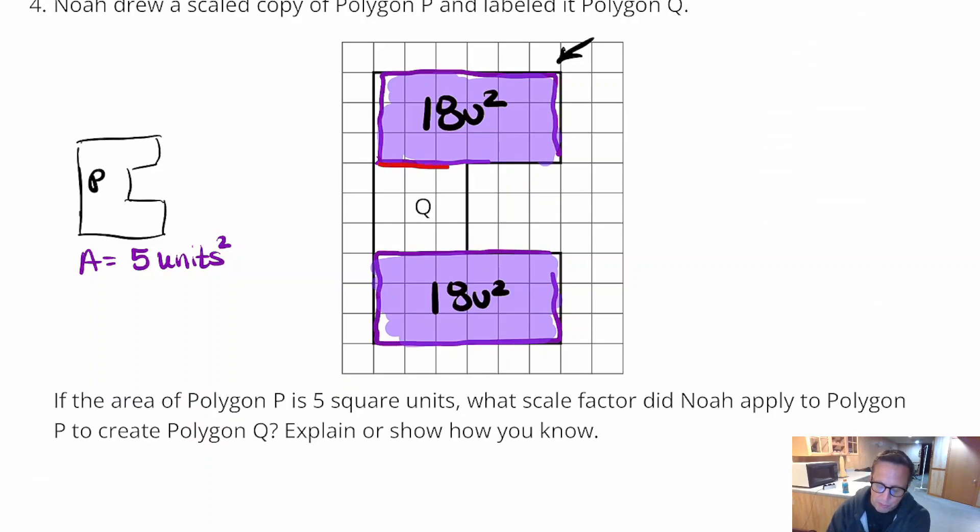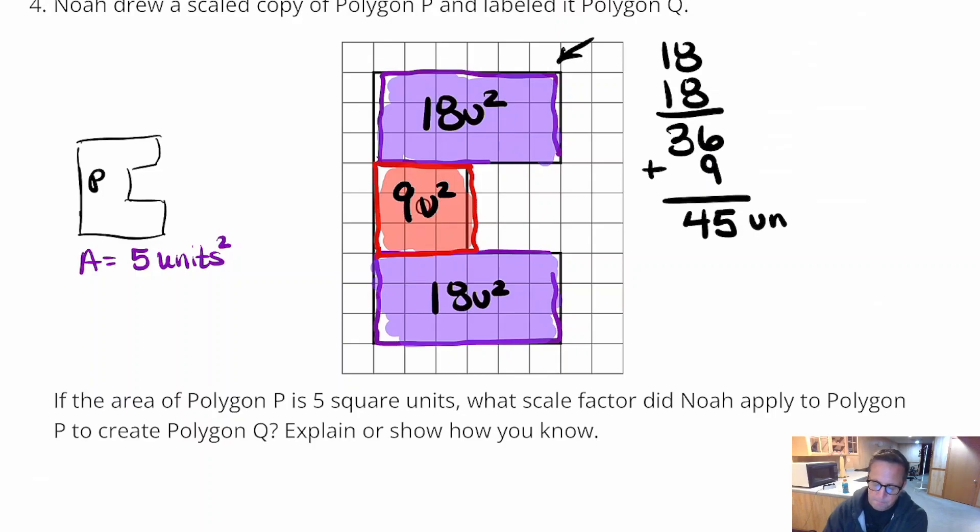And then, we have this one right here, which is 3 by 3. That's 3 by 3. And that makes 9 square units. What do we have now? So, we have an area. If we add all that up, we've got 18 plus 18, which is 36 plus another 9 is 45. So, the area of this one is 45.